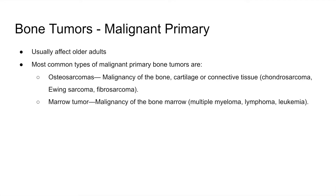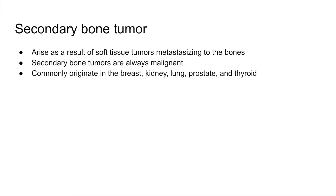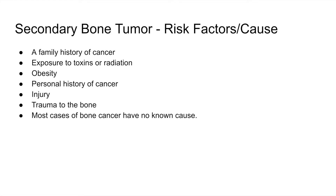Malignant primary bone tumors usually affect older adults. The most common types are osteosarcomas and marrow tumors. Secondary bone tumors arise from soft tissue tumors metastasizing to the bone — they start elsewhere and spread to the bone, so they are always malignant. They most commonly originate in the breast, kidney, lung, prostate, and thyroid. Risk factors include family history of cancer, exposure to toxins or radiation, obesity, history of cancer, injury or trauma to the bone, or no known cause.